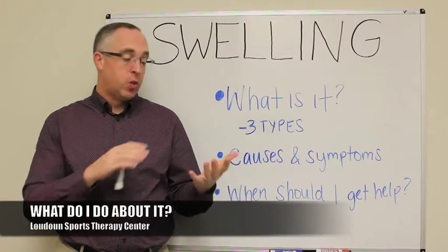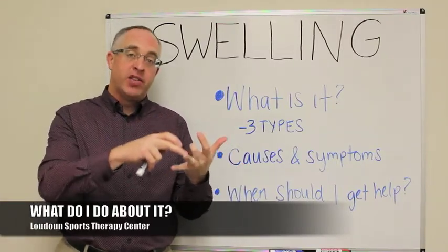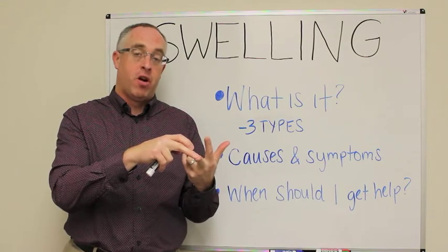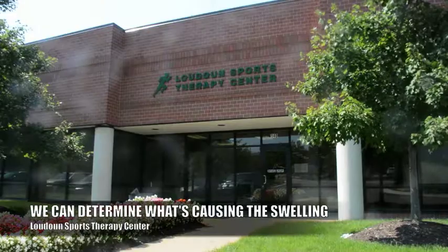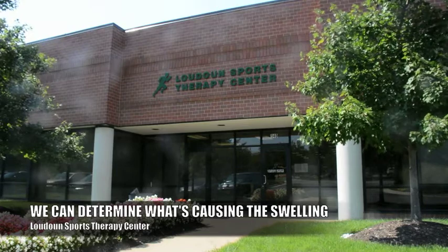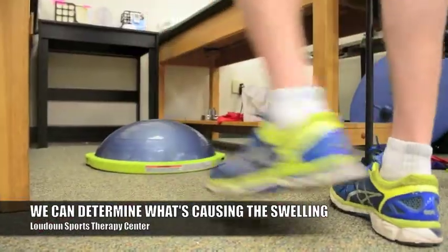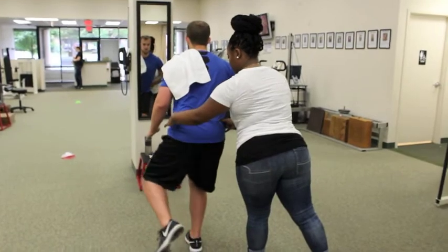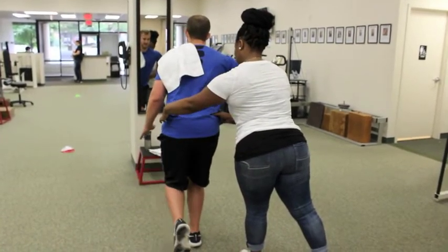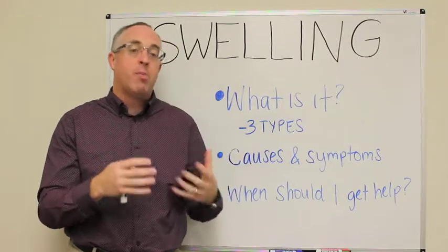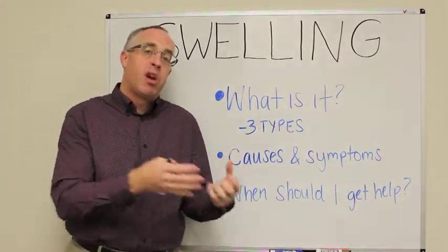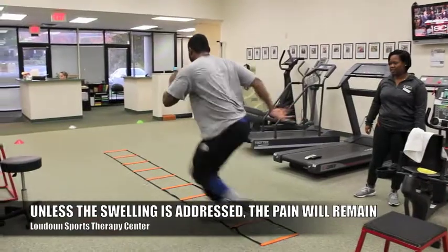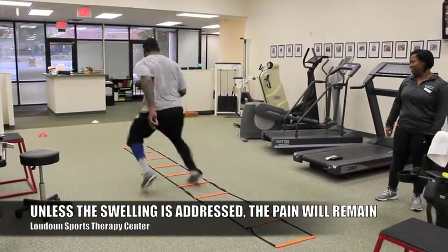So what do you need to do if you have visible swelling, or pain and stiffness that didn't go away after 24 hours, or symptoms that are getting worse within that 12 to 24 hour window? You really need a good evaluation and assessment of what's happening in that area. An expert physical therapist can figure out when your problem started and what the causes of that swelling are — because ultimately, pain is coming from swelling, and unless the swelling is addressed, the pain will become repetitive and chronic.